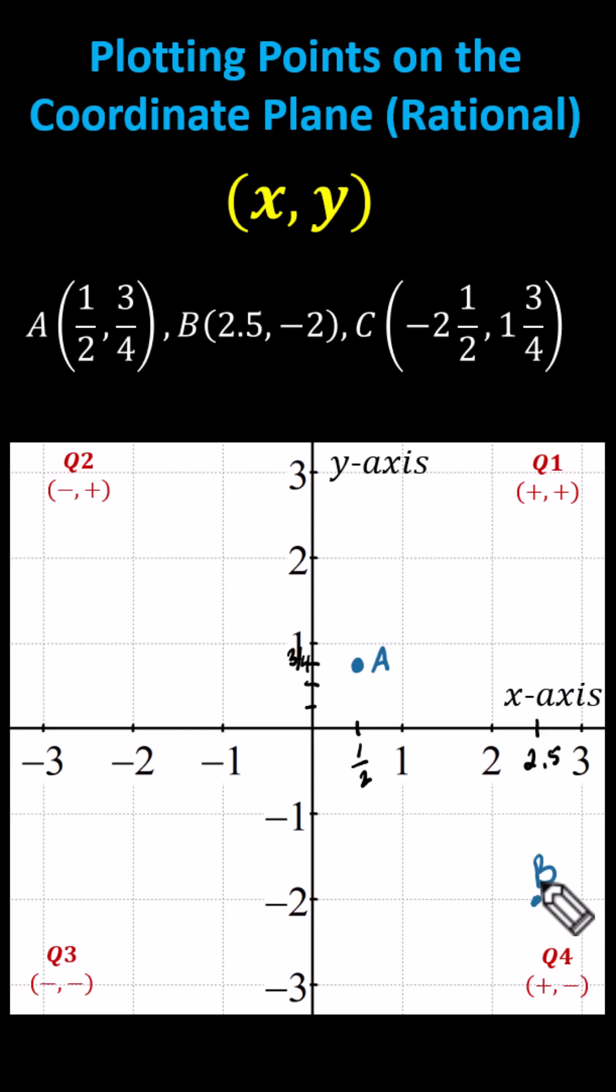And finally, point C has coordinates negative two-and-a-half comma one-and-three-fourths. Let's locate negative two-and-a-half on the x-axis, which is between negative two and negative three, which would be here. And then one-and-three-fourths on the y-axis will be between one and two.